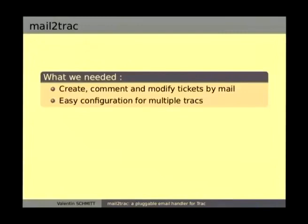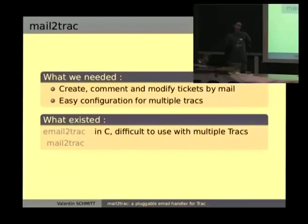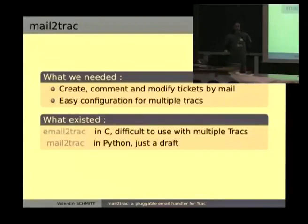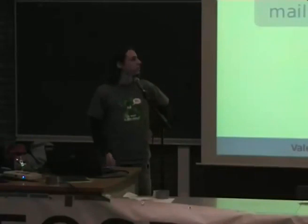There were two plugins already existing at that time. One, whose name is email2trac, is written in C, but it was difficult to use with multiple Tracs, so it didn't fit our needs. There was also mail2trac, which was just a draft — not a beer, just a draft — and it was written in Python, which is nice because the whole Trac community is really about Python. So we basically carried on the development that this developer, Cos, had just begun.